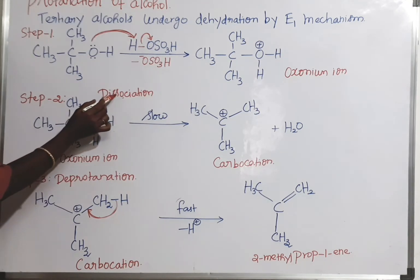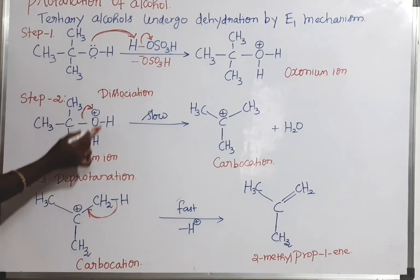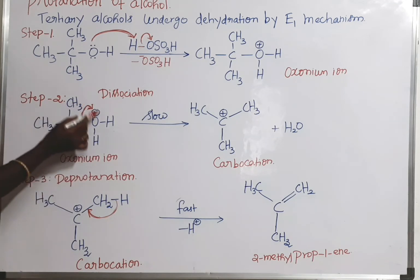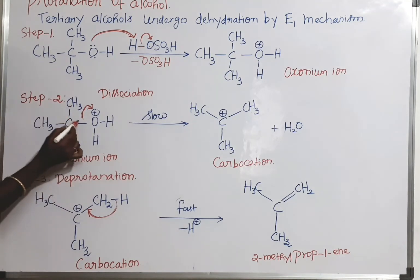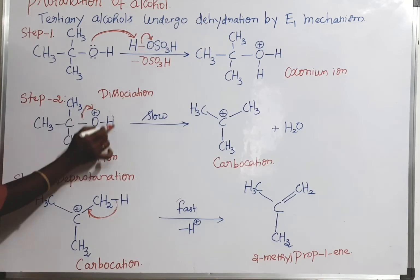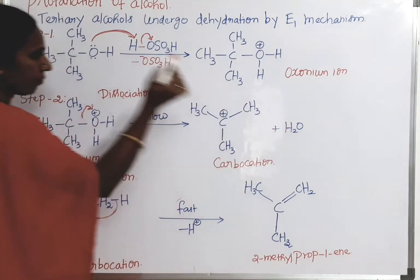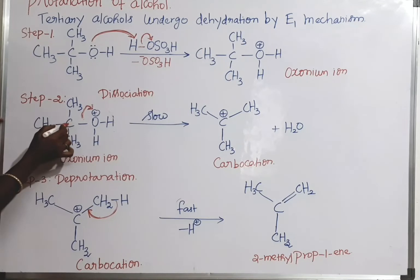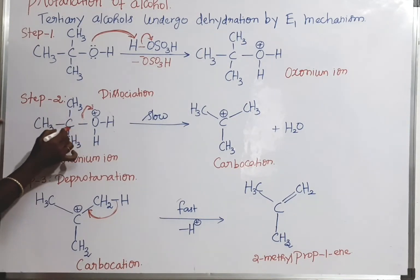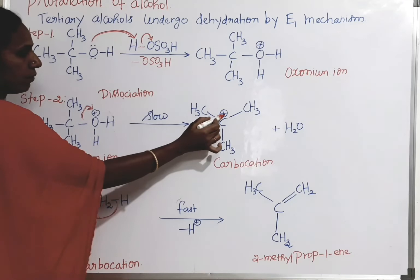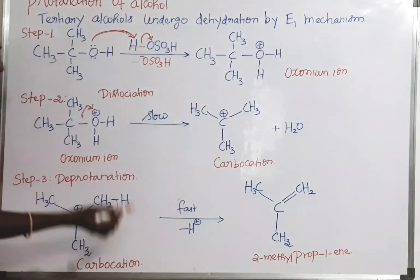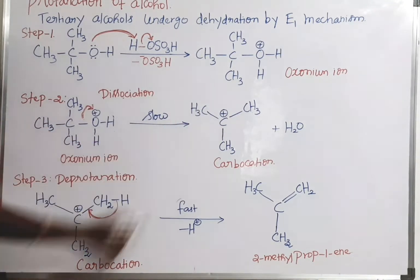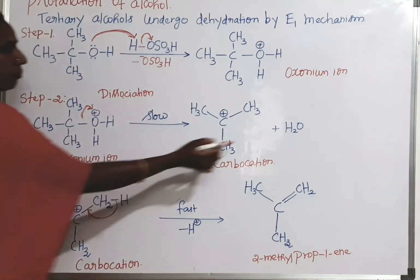The second step is the dissociation of the oxonium ion. This is a slow process. Here, this bond shifts to the oxygen, so it gets neutralized and is removed as a water molecule. Because of donating electrons, the carbon carries a positive charge. So there is a formation of a carbocation in the second step, and the water molecule is removed.